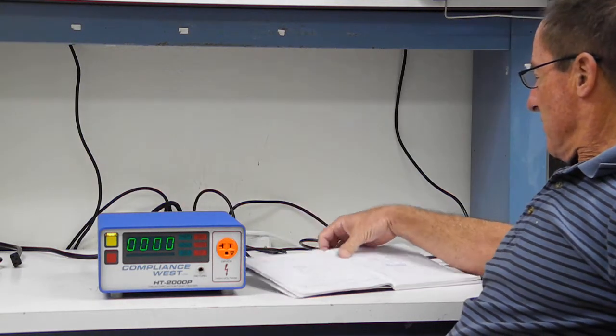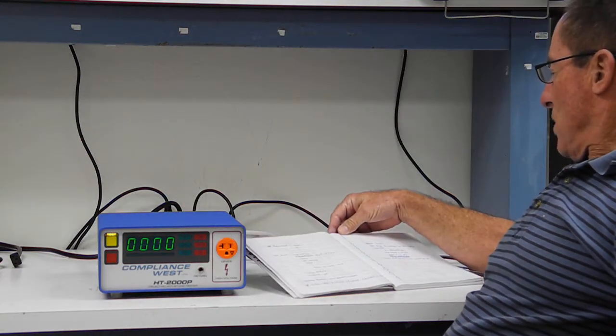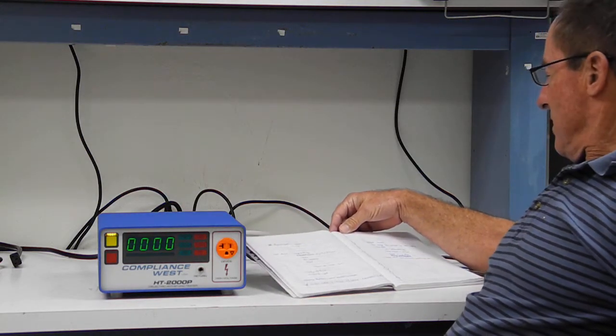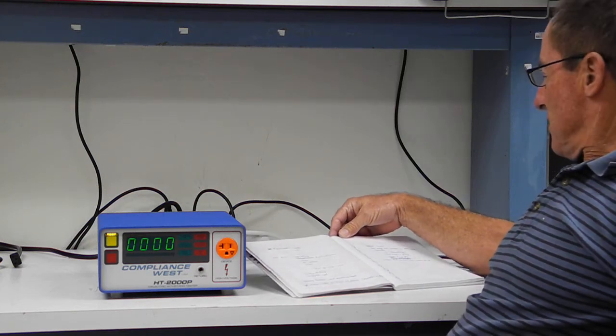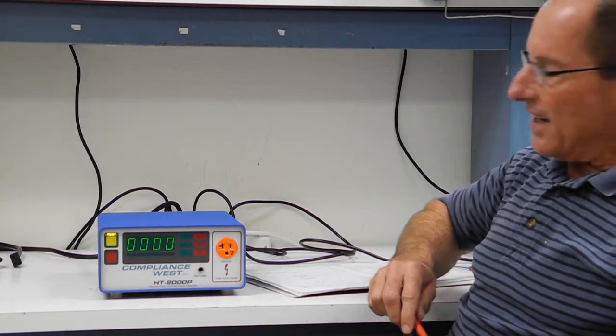This Hypot Tester outputs AC up to 2,000 volts. Today I'm going to show you how to configure it for 1,200 volts AC, a trip current of 2 mils, and a test time of 1 second.